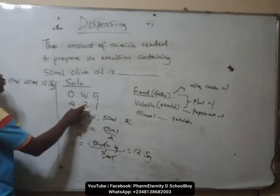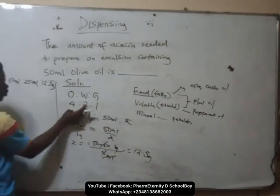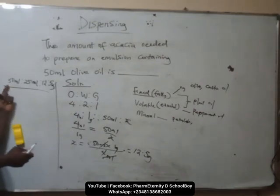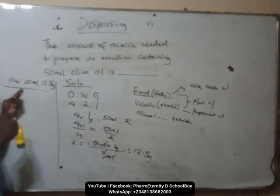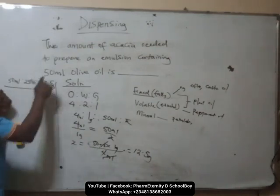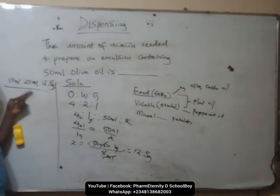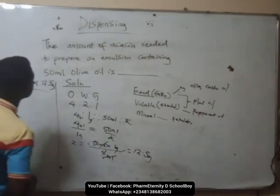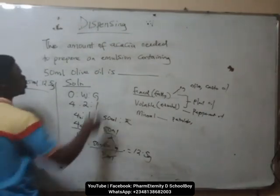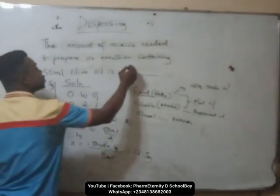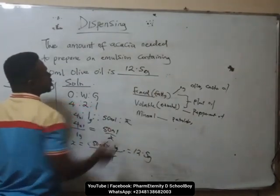If you solve it using the water ratio of 2 to 1, you get the same answer, because half of 25 is 12.5. So the final ratio is 50 ml olive oil to 25 ml water to 12.5 grams of acacia gum. The answer to this question is that we need 12.5 grams of acacia to prepare an emulsion containing 50 ml of olive oil.